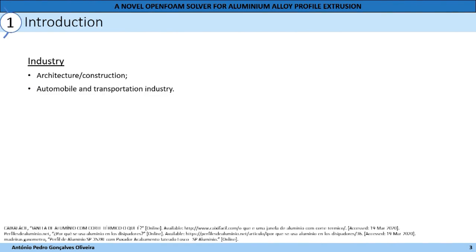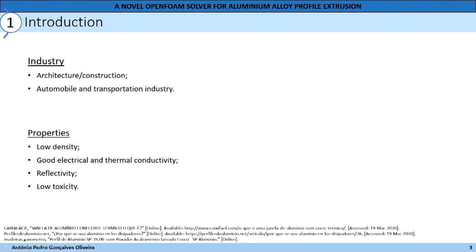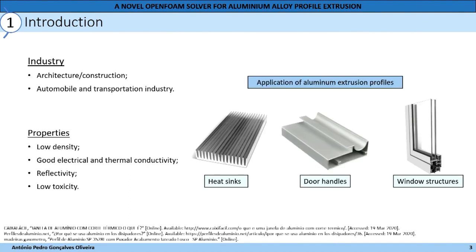The industry that most uses aluminum alloy profiles is the construction and transportation industry, due to properties like low density, good electrical and thermal conductivity, reflectivity and low toxicity. Here we can see some examples of aluminum extrusion profiles like heat sinks, door handles, and window structures.